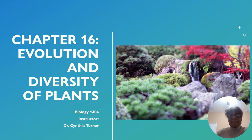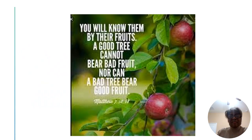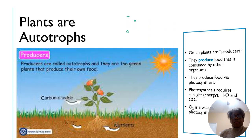Chapter 16: Evolution and Diversity of Plants. The book of Matthew says you will know them by the fruits — a good tree cannot bear bad fruit, nor can a bad tree bear good fruit. Recall from earlier in the semester, one of the topics we discussed was autotrophs versus heterotrophs. Heterotrophs are consumers — they need to consume their food — whereas autotrophs are producers that can produce their own food.